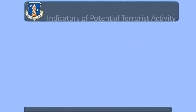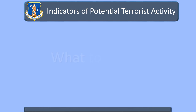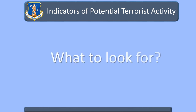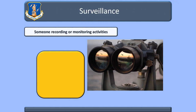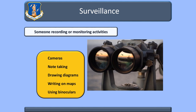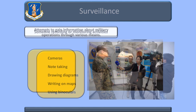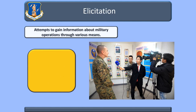There are several indicators you should be aware of concerning potential terrorist activity. An indication of surveillance can include cameras, note-taking, drawing diagrams, writing on maps, or using binoculars. Elicitation includes gaining information via mail, fax, phone, or in person.